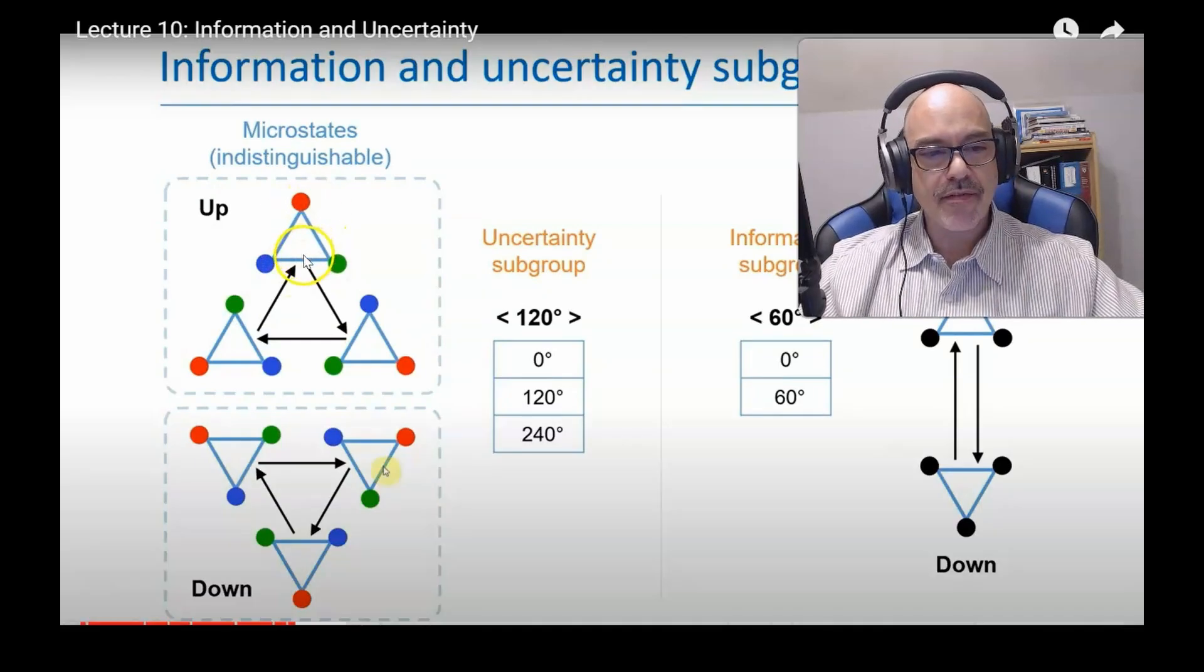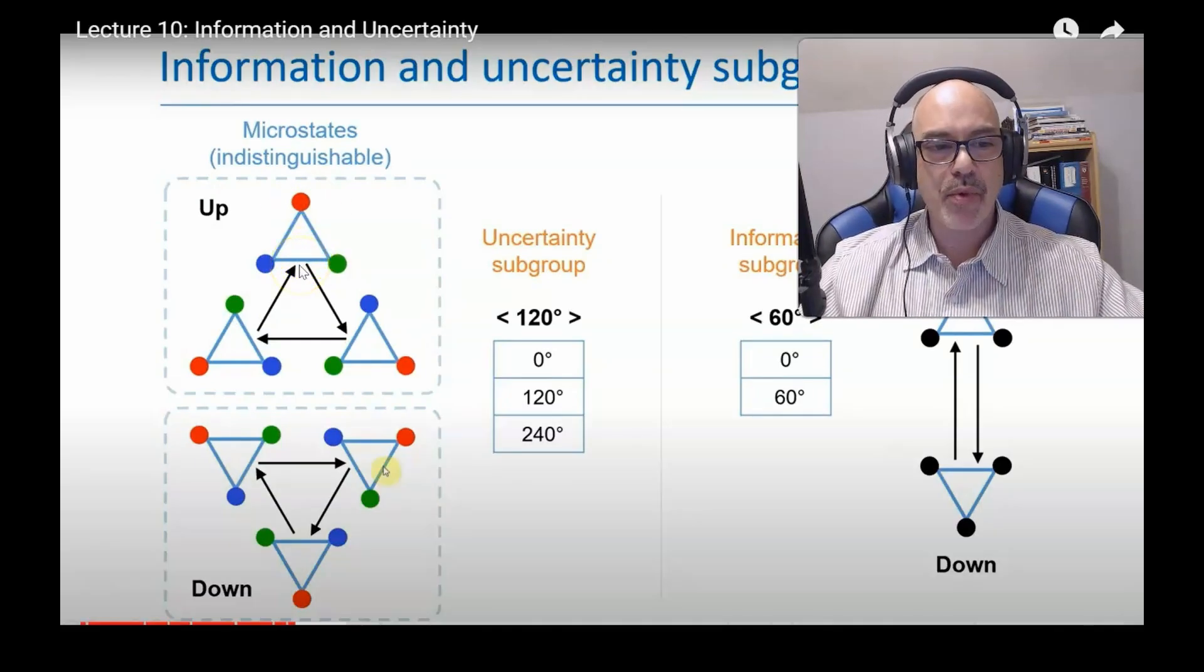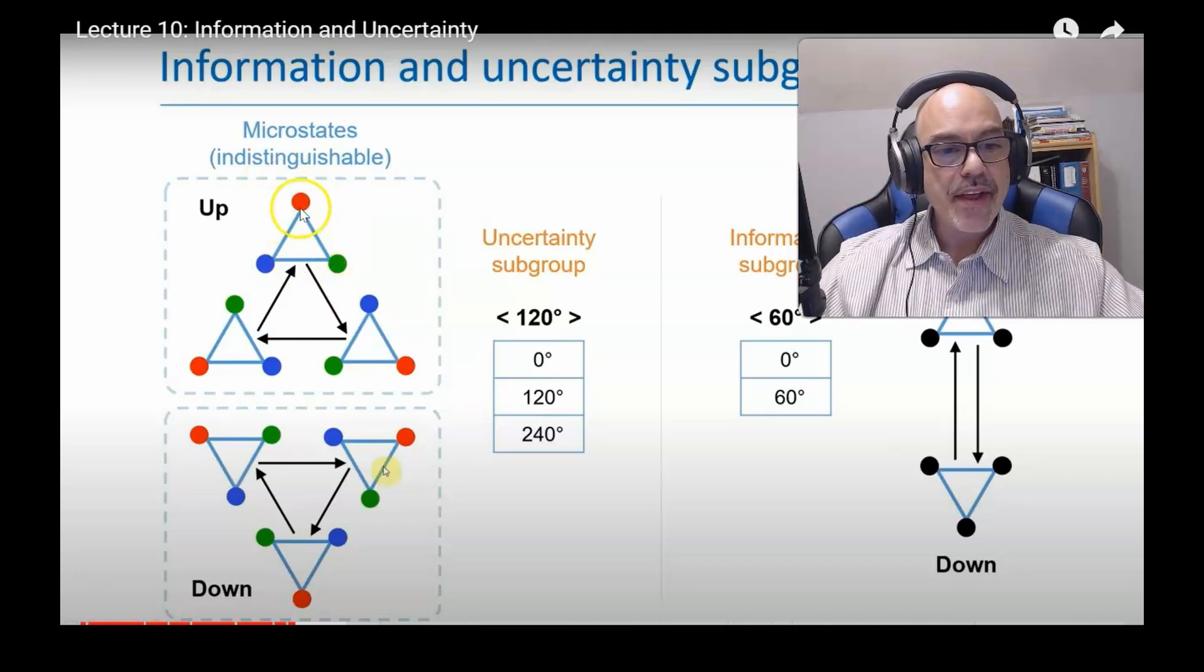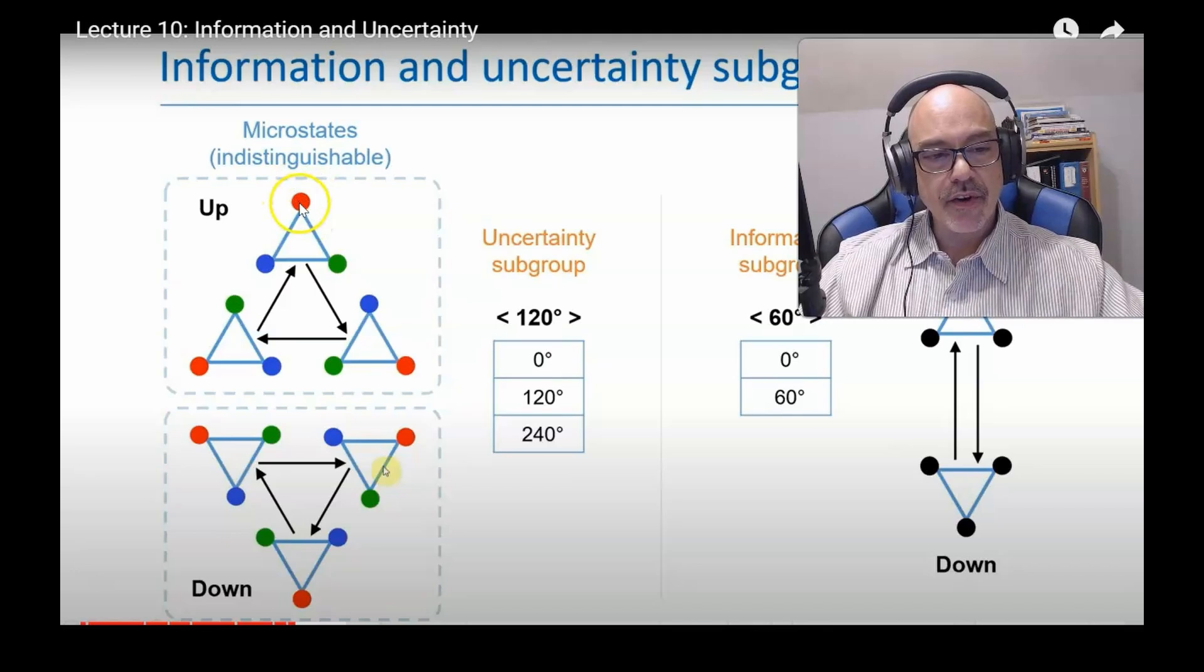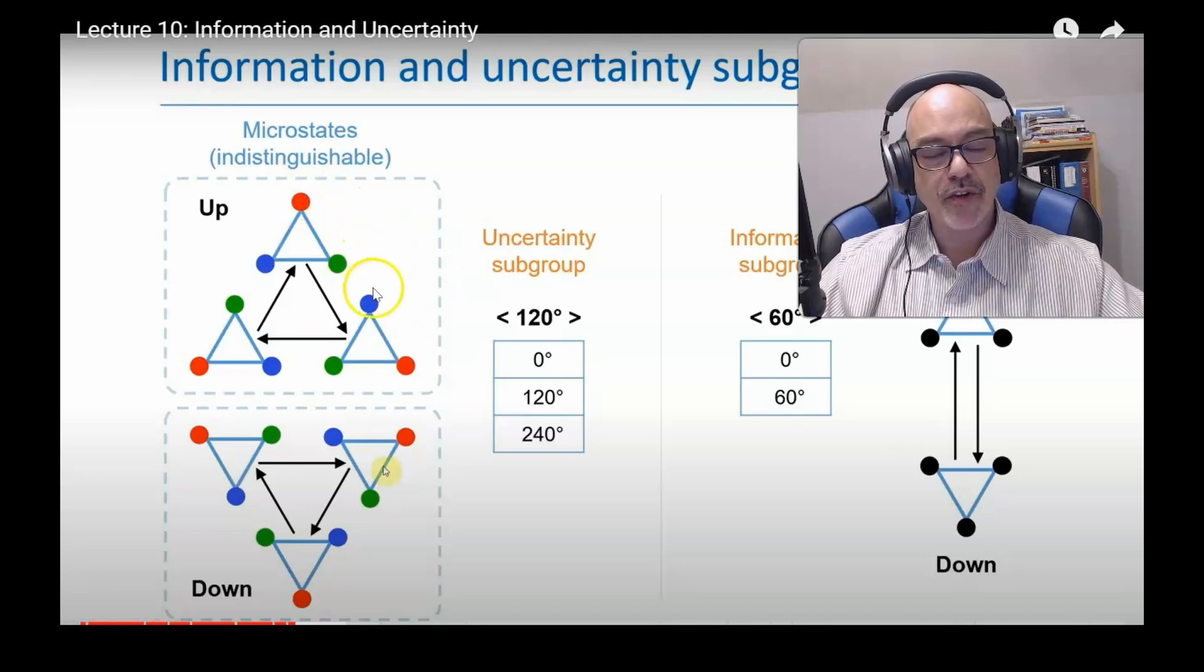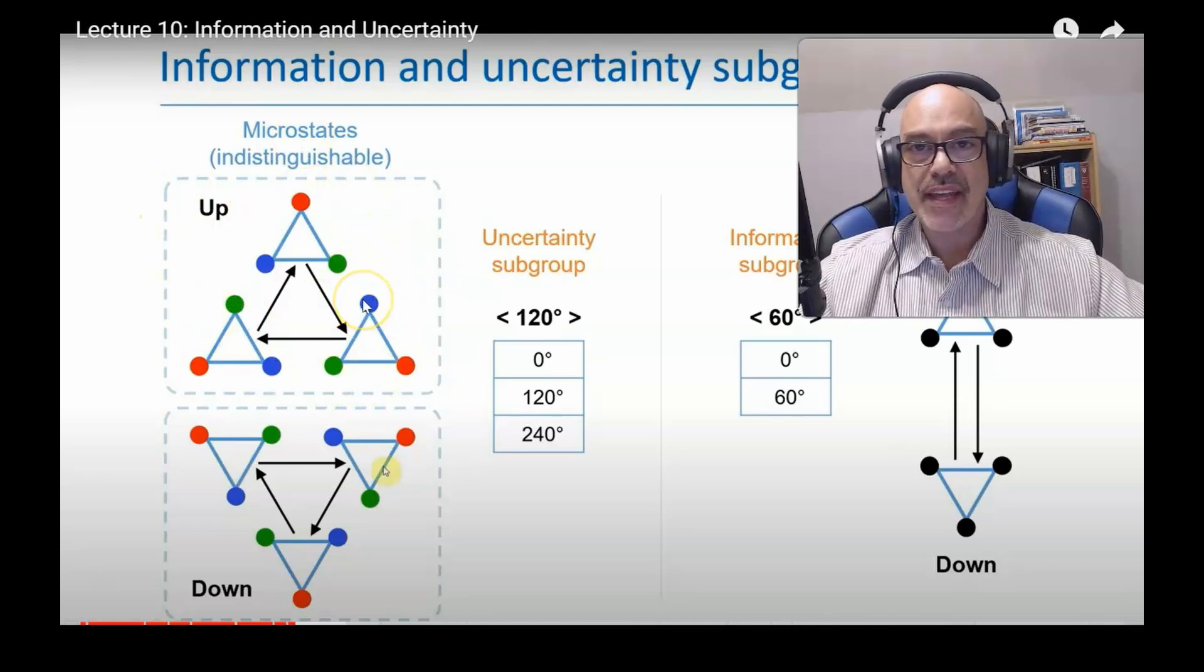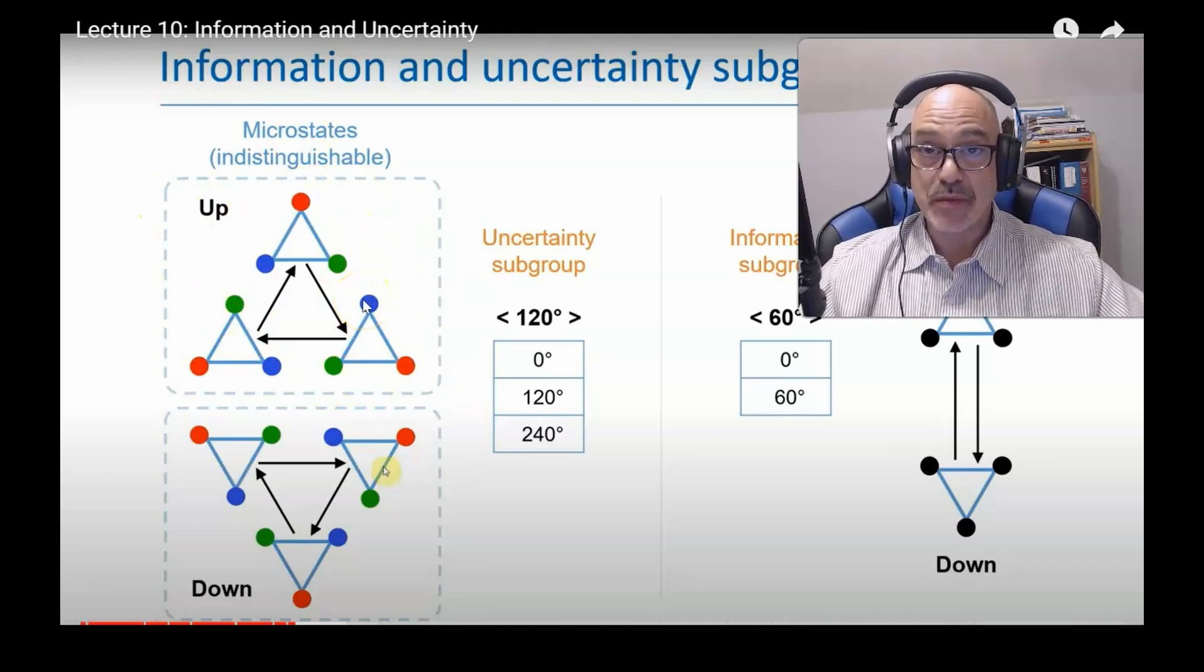If my operation is to rotate by 120 degrees, if that's what I'm allowed to do, then if you start out in a vertex up state and you rotate by 120 degrees, you will always get to another vertex up state. There's no way to get out of that subspace.